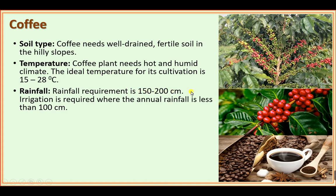Rainfall required for coffee is 150 to 200 centimeters. Plants grow well where no waterlogging takes place, so hilly regions are suitable. Irrigation is required where annual rainfall is less than 100 centimeters to support the growth of the coffee plant.